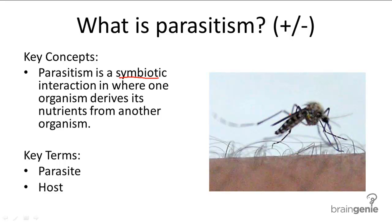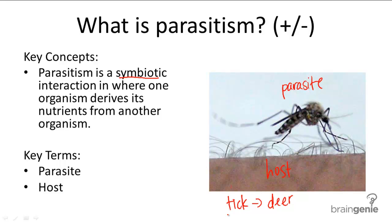For example, this is a mosquito feeding on a human, so the mosquito is acting as the parasite and the human is acting as the host because the parasite is feeding on the human. Another example would be the tick which feeds on deer, so the tick is the parasite whereas the deer is the host.